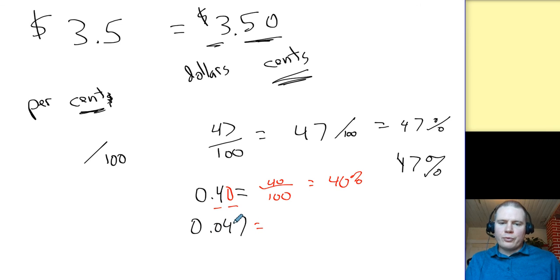0.047, 0 tenths, four hundredths, that's four hundredths. But it's not just four, it's four and then seven in the next place below that. Four and seven-tenths of a hundredth. 4.7 percent.